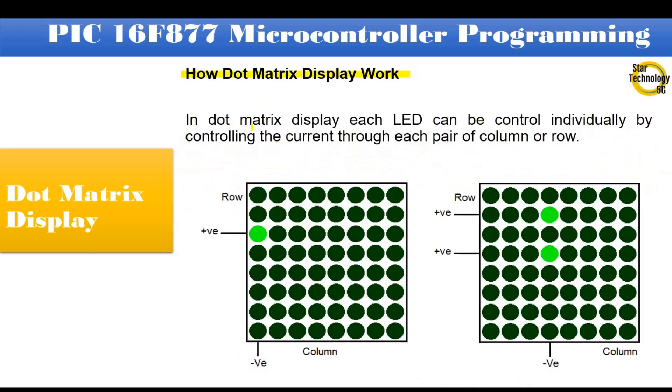How dot matrix display work. In dot matrix display each LED can be controlled individually by controlling the current through each pair of column or row. For example, if you want to turn on row number 3 and column number 1 LED, we need to give logic high or positive volts to row number 3 and give logic low or ground volts to column number 1.